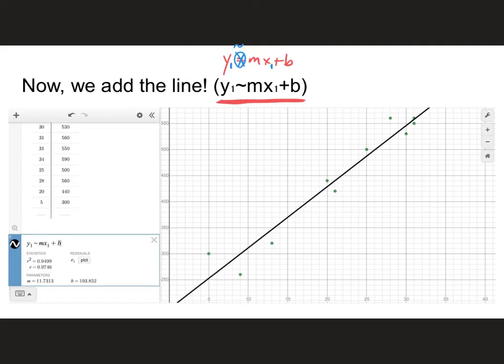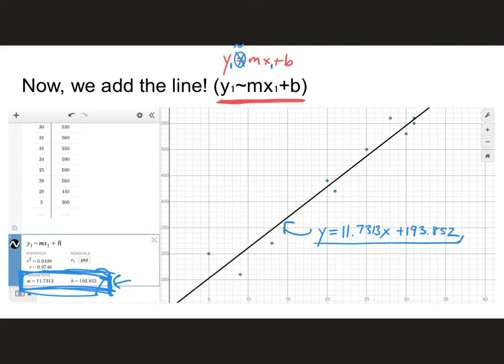What's even cooler is the fact that Desmos, right down here, tells you the values for b and for m that are going to fit my line. If I use these values for m and for b, I can come up with my equation of that line, which is y equals 11.7313x plus 193.852. That is the equation of this line of best fit. Desmos did all of the work for us. It's magical.